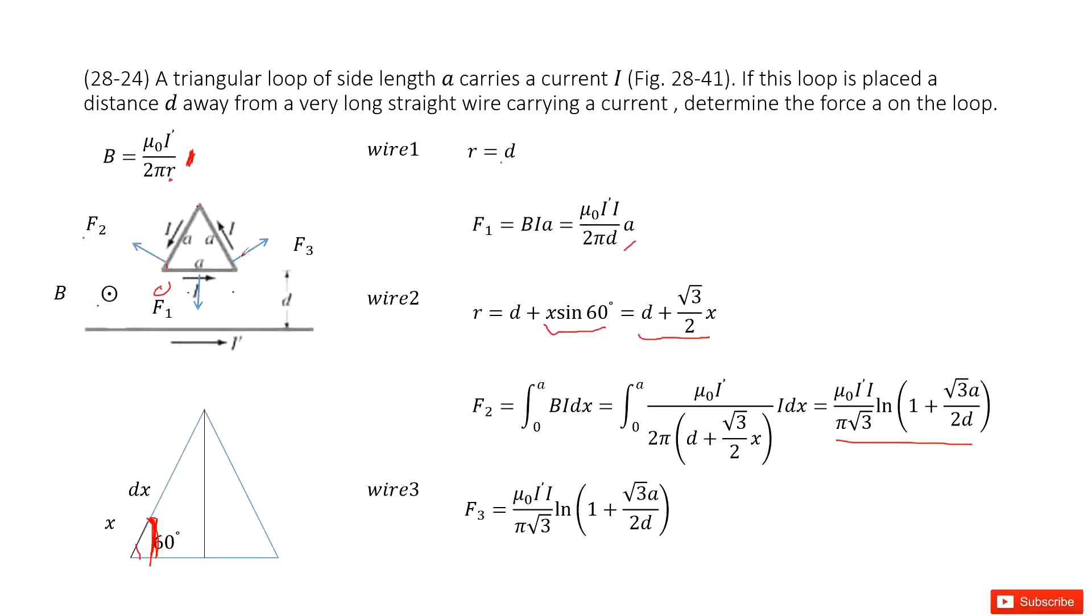Now we look at F3. Very obviously, we can see F2 and F3 have mirror symmetry. The side length A is equal, I is equal. So of course, the magnitude of F3 equals the same as F2. Now we get three forces: F1, F2, and F3.